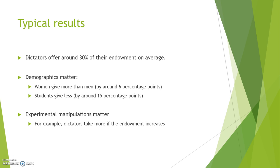We also know that experimental manipulations matter. For example, if the experimenter were to increase the endowment, dictators would take more on average — not only in absolute terms, but also in relative terms.